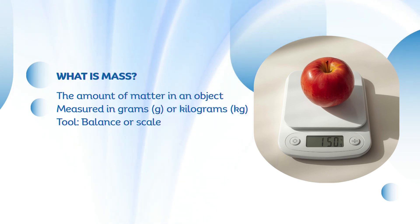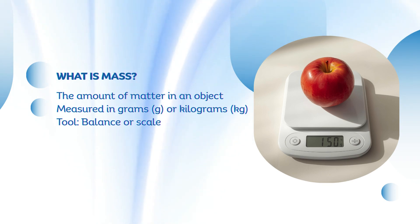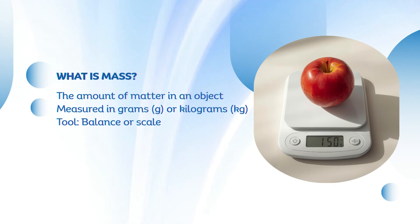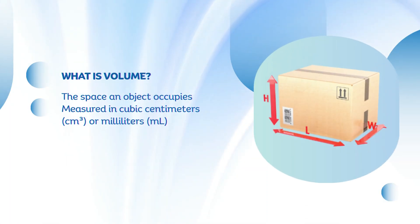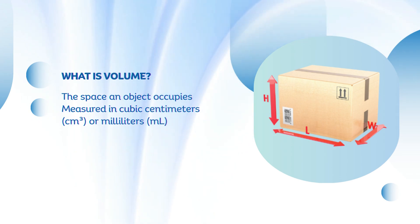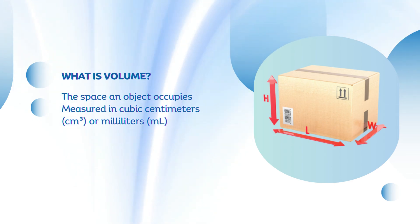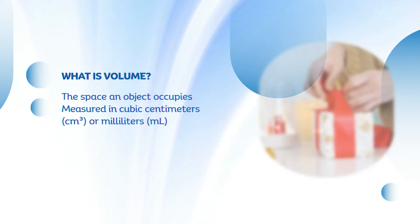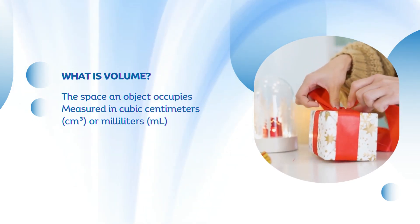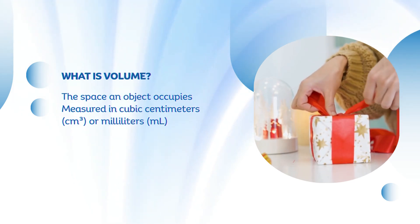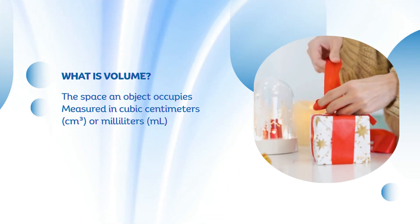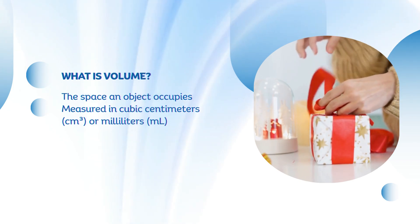Now that we know what mass means, let's learn about volume — the amount of space matter takes up. Volume is how much space an object takes up; think of it as the three-dimensional size of the object. If you imagine wrapping a box, the paper covers its volume. We measure volume differently depending on the shape of the object.